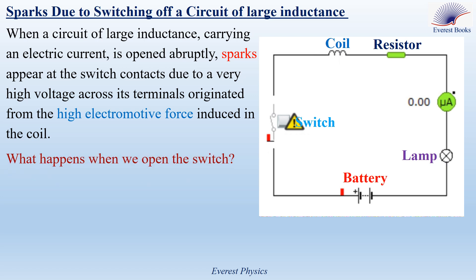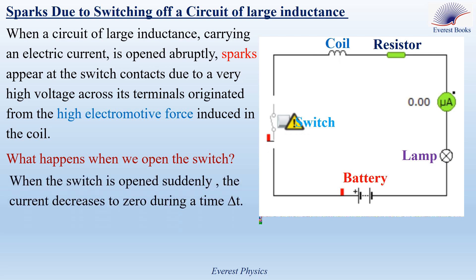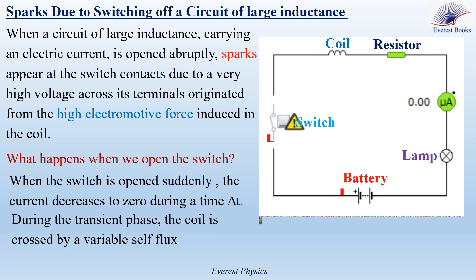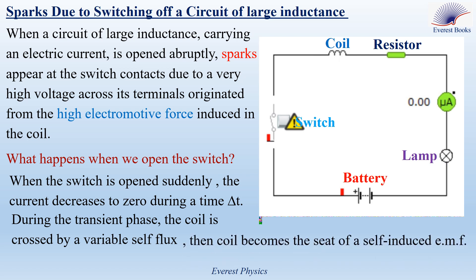Why is the induced electromotive force very large in the coil? When the switch is opened suddenly, the current decreases to zero during a time delta t. In our experimental simulation, during the transient phase, the current decreases from 69.2 milliampere to zero. Since the current varies, the magnetic field crossing the coil varies, so the coil is crossed by a variable self-flux and becomes the seat of a self-induced electromotive force.